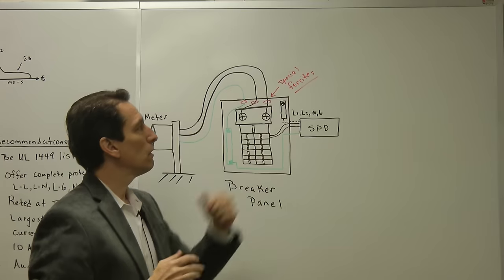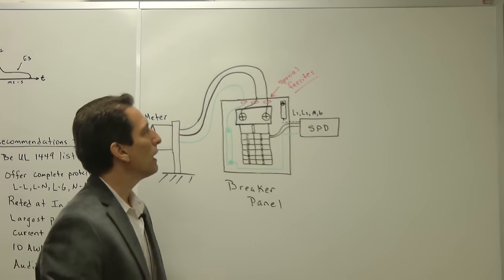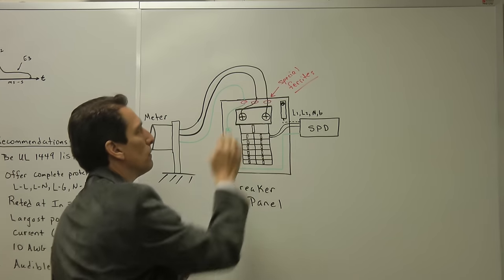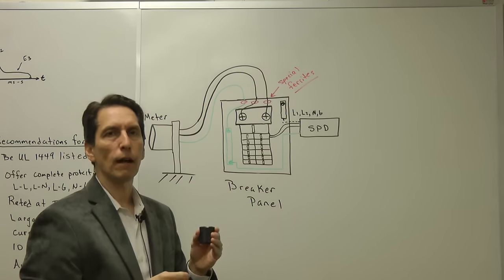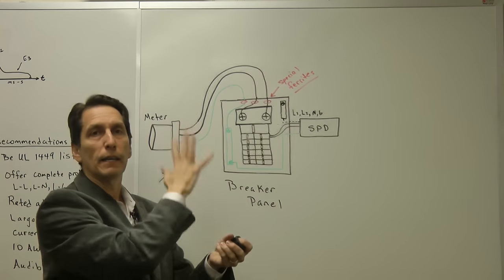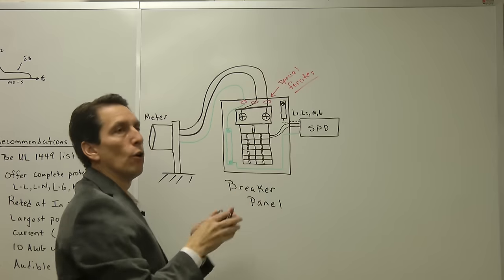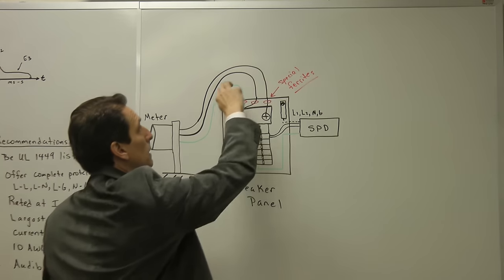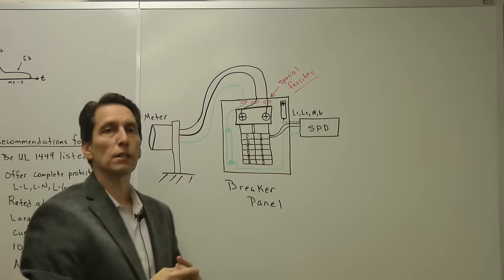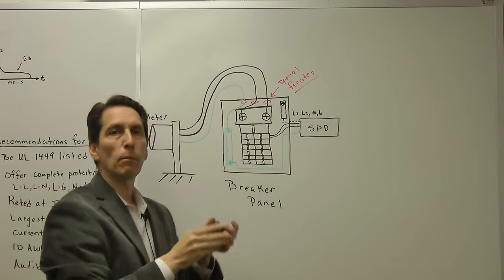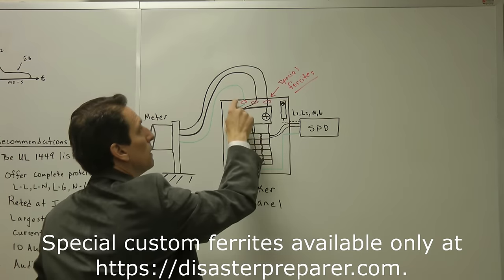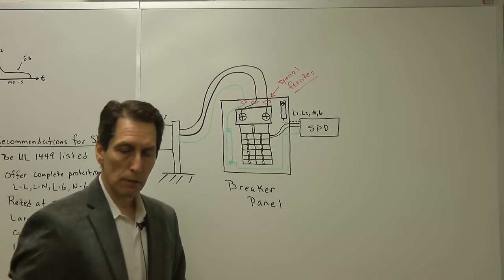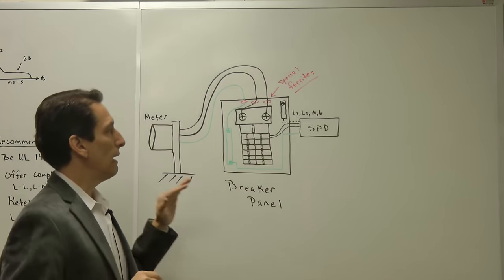I found a ferrite of the right material — a very unique material — and figured out a way to custom modify it so it won't saturate. It's a clamp-on ferrite, which is ideal because you don't have to remove the heavy-duty wires or kill the main power. The electrician can just clip them right around the wires before they attach to the main breaker — one ferrite per wire. You'd need three ferrites if you have three wires, or four if you have four wires, so double-check before ordering.